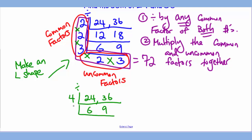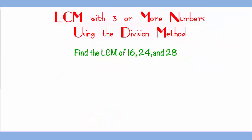And 3 goes into 6 and 9, leaving me 2 and 3. If you check your work again by multiplying the common and uncommon factors together, you will still get 72.